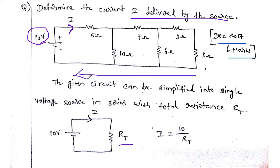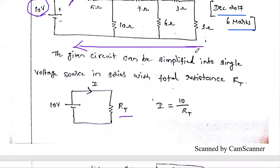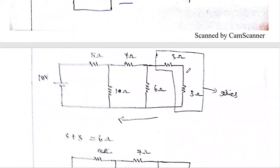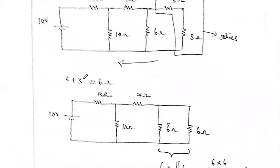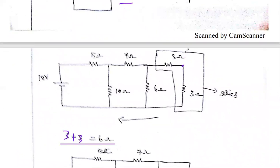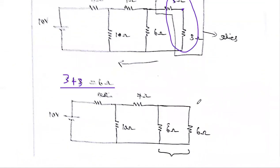Using the circuit reduction technique, we reduce the network into a single total resistance starting from the last point. The last two 3-ohm resistors are connected in series — one end connected, the other end at a different point. So three plus three gives us 6 ohms. In the next diagram, we replace those two resistances with one 6-ohm resistor.